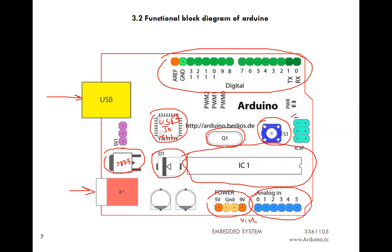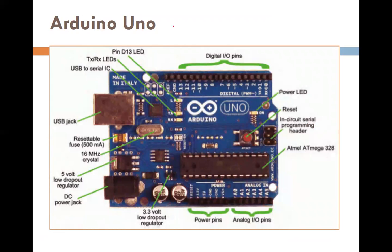The six-pin connector is called the ICSP connector — In-Circuit Serial Programming. This pin has the SPI protocol and the six pins are MISO, MOSI, SCK, Reset, Ground, and VCC. On the official board available in the market: it consists of a USB port, 14 digital I/Os each with 40 milliampere at 5 volt, a reset pin, ICSP connector, and ATmega328 microcontroller with six analog I/O pins each having 10-bit resolution.